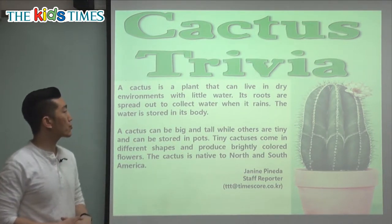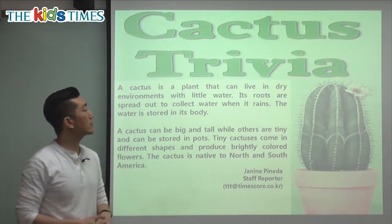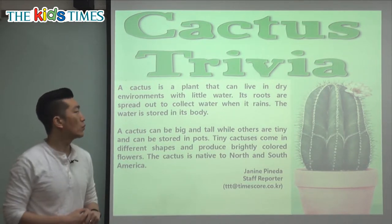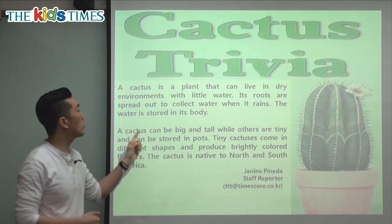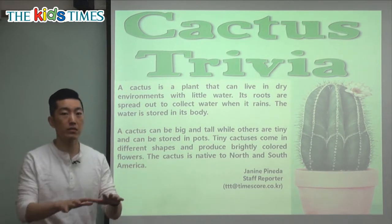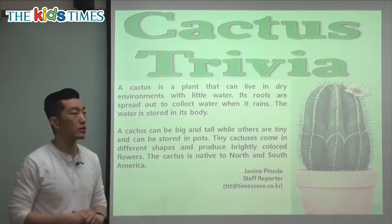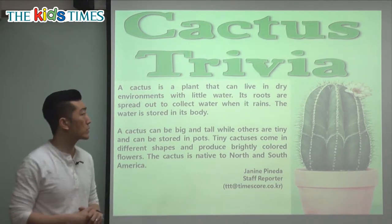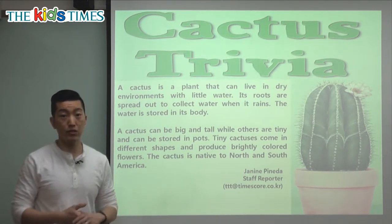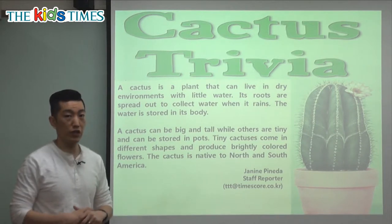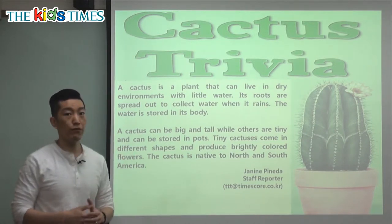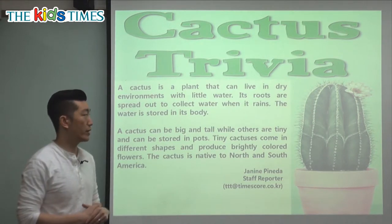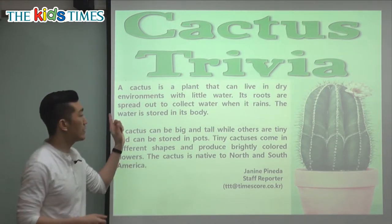Cactus trivia — a cactus is a plant that can live in dry environments with little water. Environment means area or different places. In the earth there are many different environments, such as deserts, which are very dry, forests or rainforests that are very hot and get a lot of rain, or even mountains. Those are different environments.